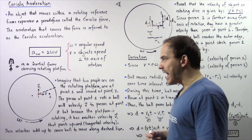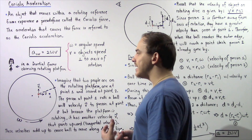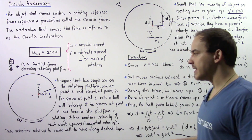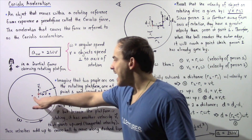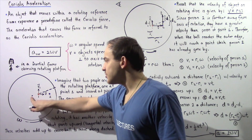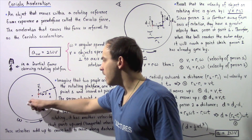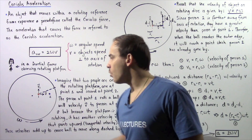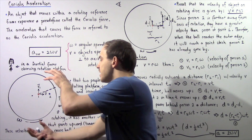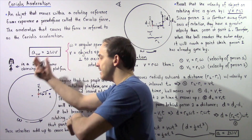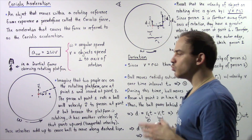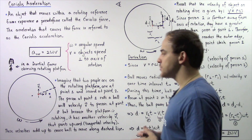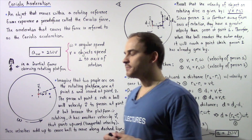Let's suppose we have a rotating reference frame — a non-inertial reference frame — that has an axis of rotation shown by a dot coming out of the board. This entire frame is rotating in a counterclockwise direction with a constant angular speed given by omega.